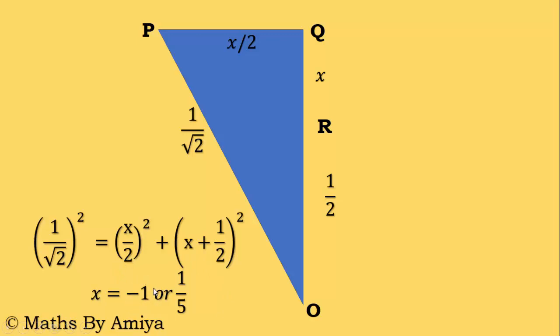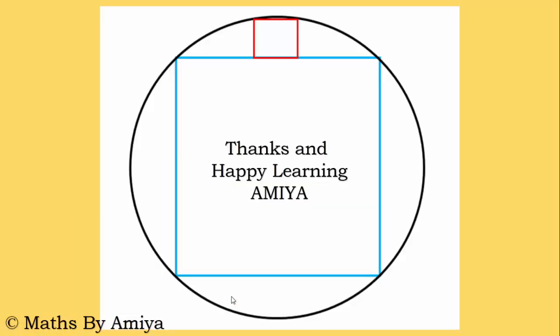Minus 1 cannot be a value of any side, so our answer is 1 by 5. And this is our answer. But still if you have any doubt feel free to ping me. Thanks and happy learning.